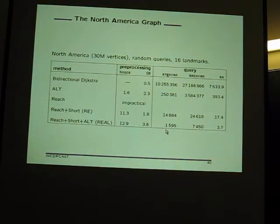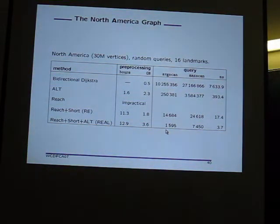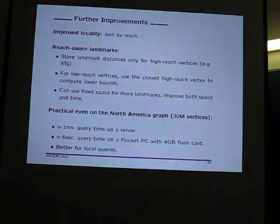On average, you visit one or two thousand vertices even on a 30 million vertex graph, for random queries. Bidirectional Dijkstra's algorithm visits roughly half the graph — about 15 million nodes — whereas this visits only 1,500 nodes. That's several orders of magnitude faster. Even the worst case is less than 10,000 vertices, which is just a few milliseconds.